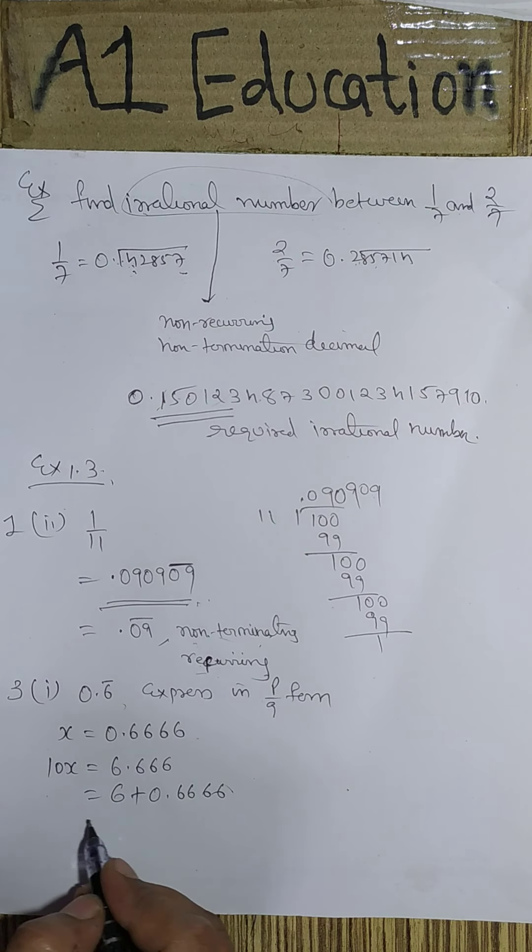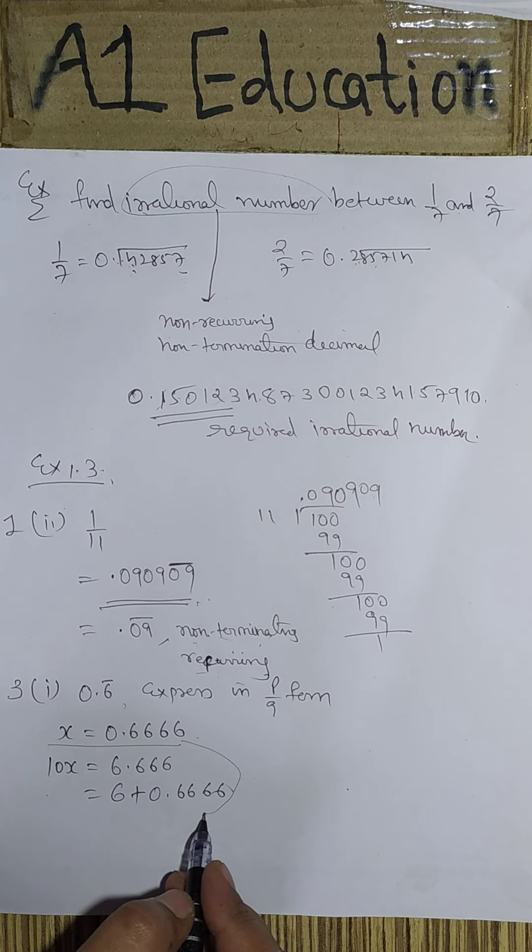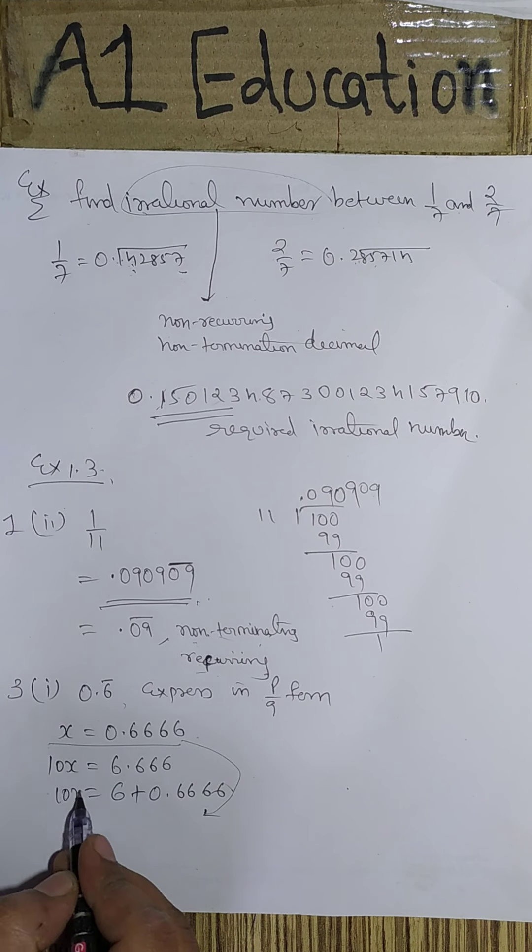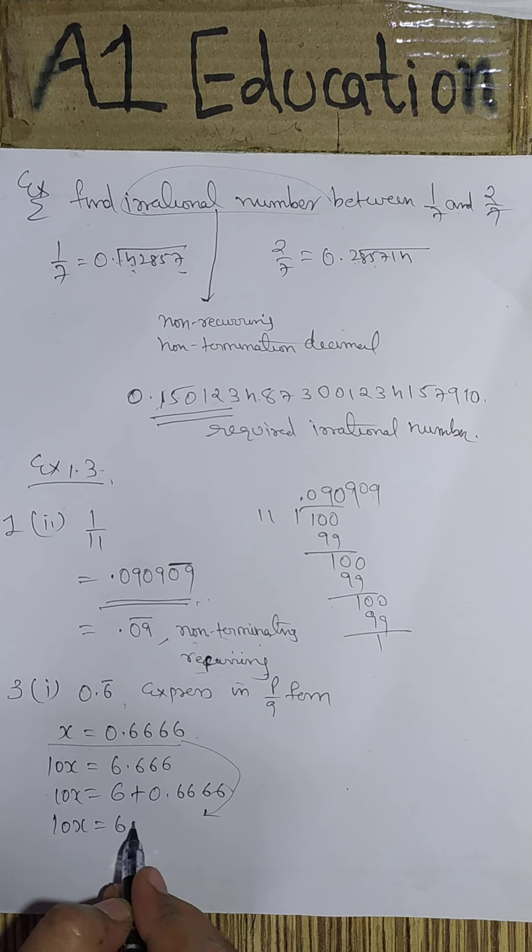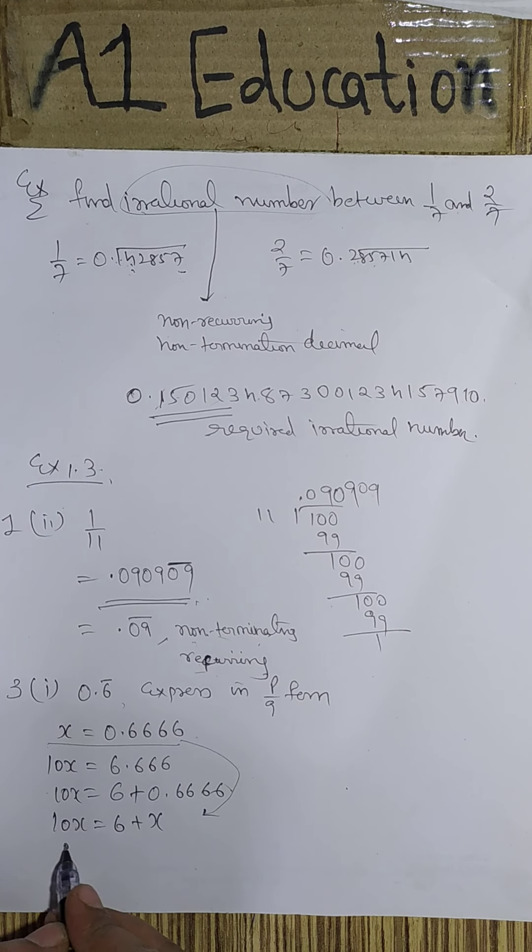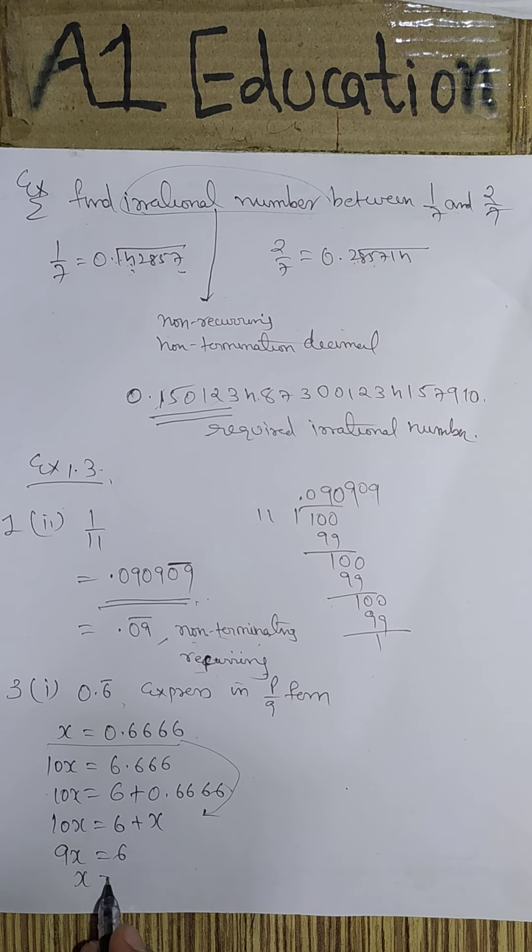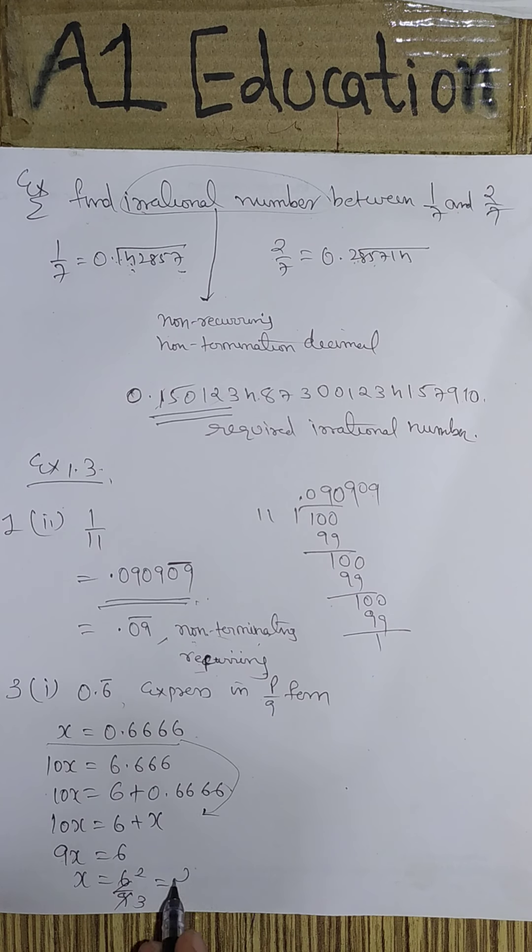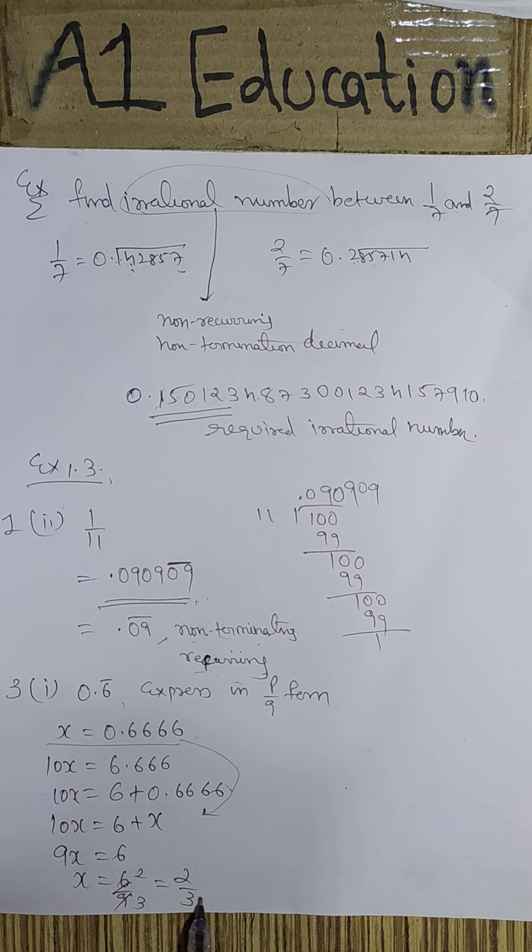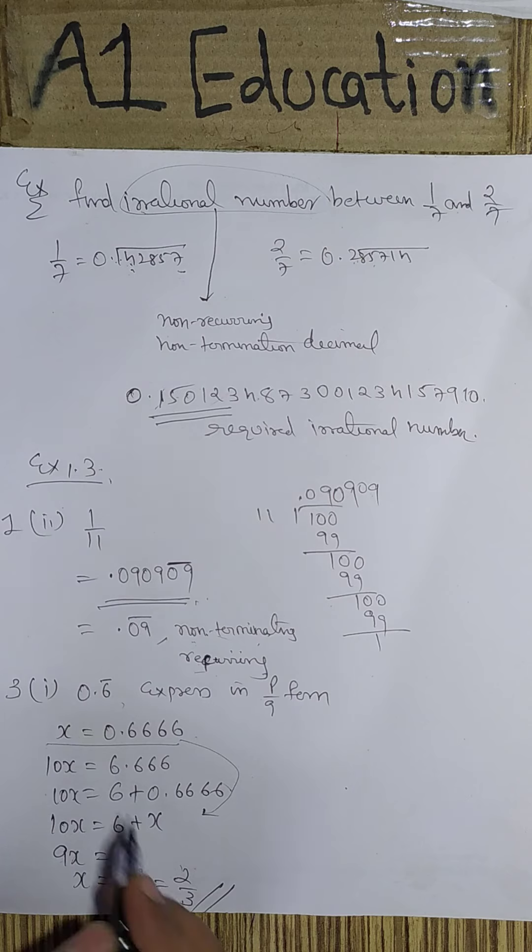This is nothing but our assumption x. So substituting this, 10x equals 6 plus x. Taking x to the left hand side, 9x equals 6. So x equals 6/9, which is 2/3. This is the p/q format for this number.